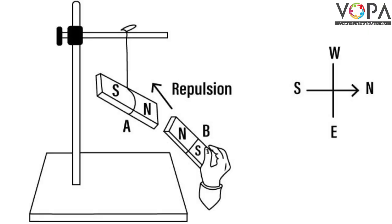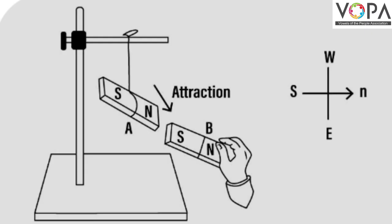Next characteristic of a magnet. Fix a bar magnet to a stand as shown in the figure. Let it become steady. Take another bar magnet near the hanging bar magnet and observe what happens. Do the same again and again, exchanging the ends of the magnet. What do you see? There is a repulsion between the like poles of a magnet, while there is attraction between the opposite poles.